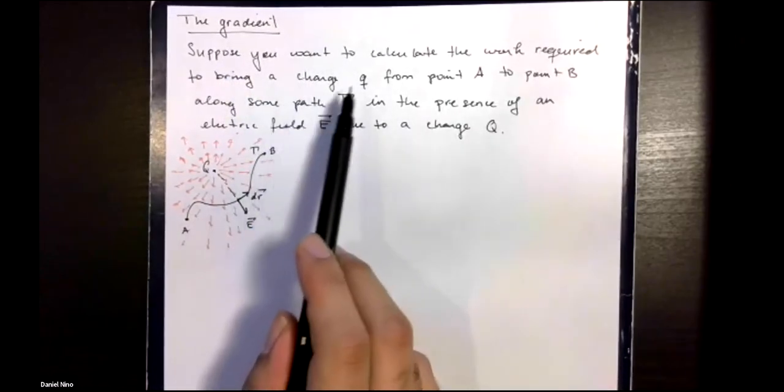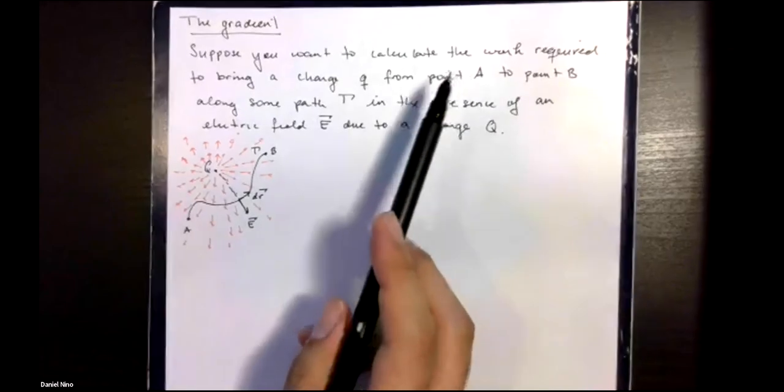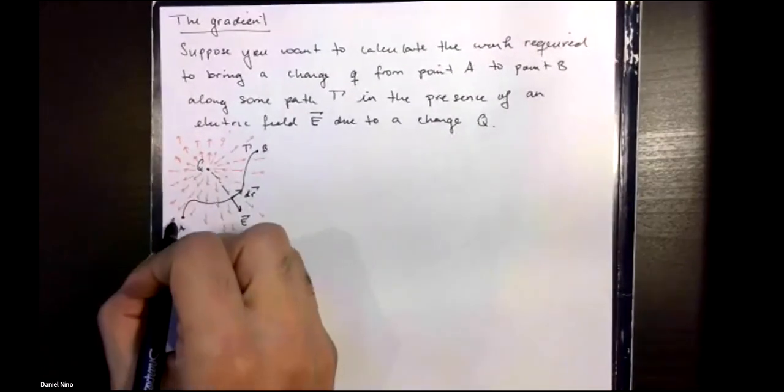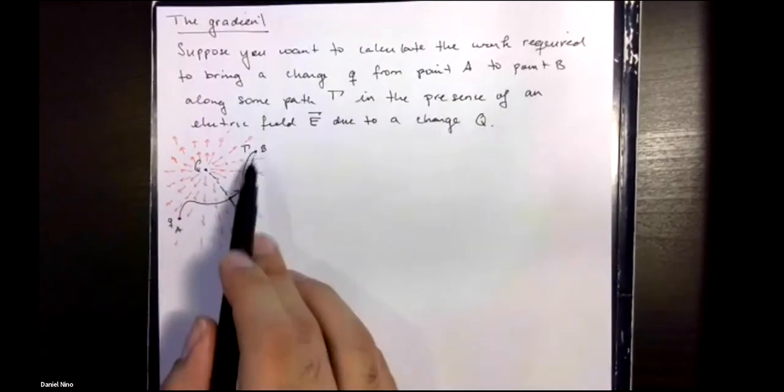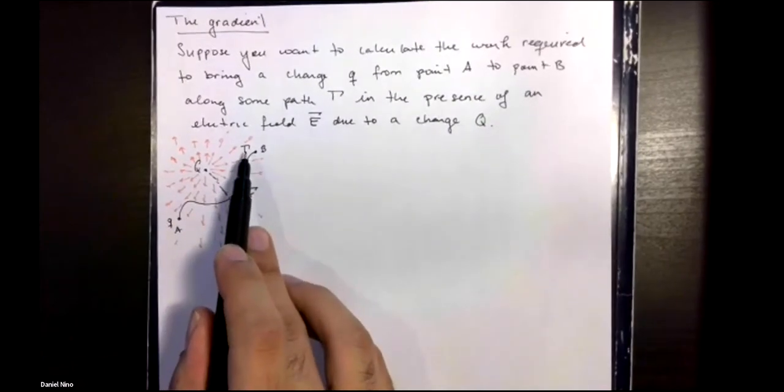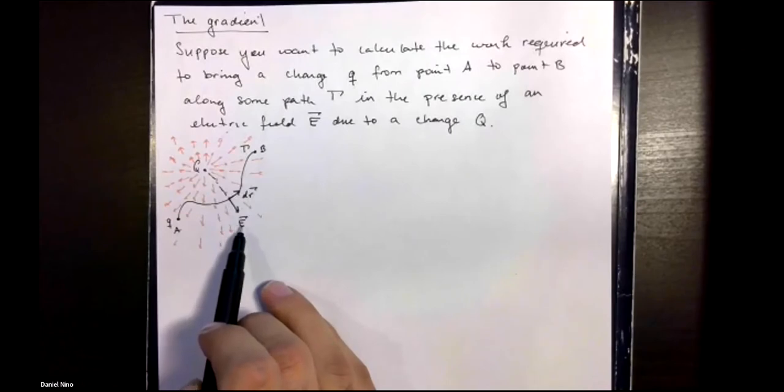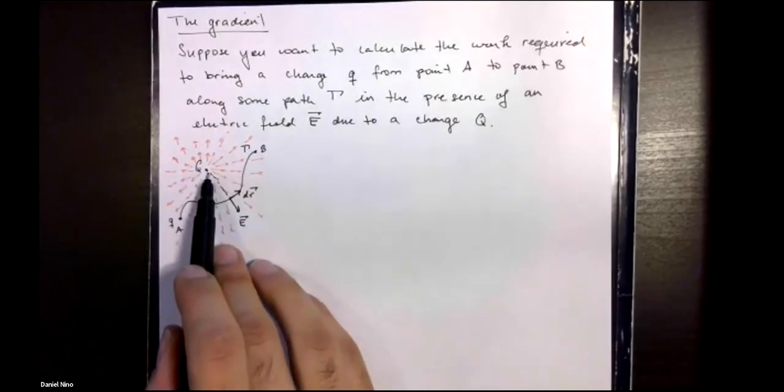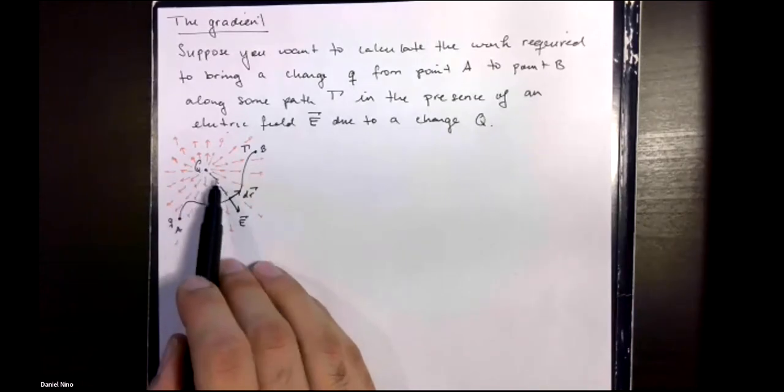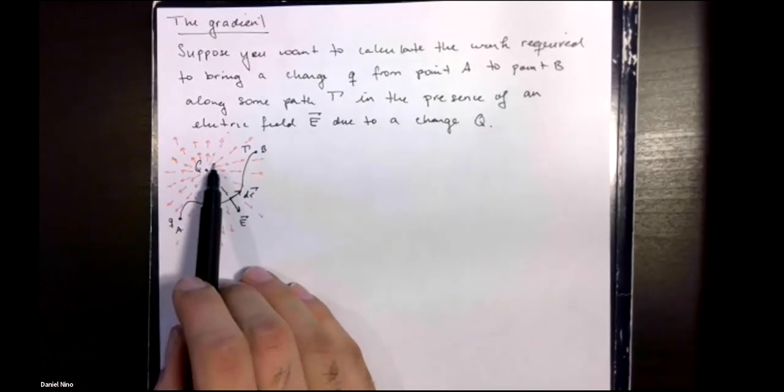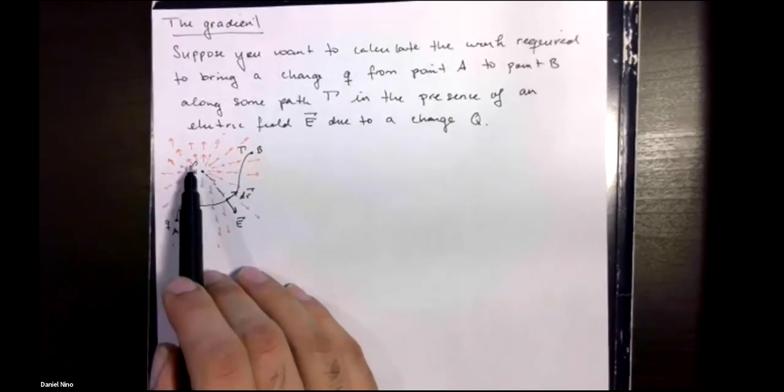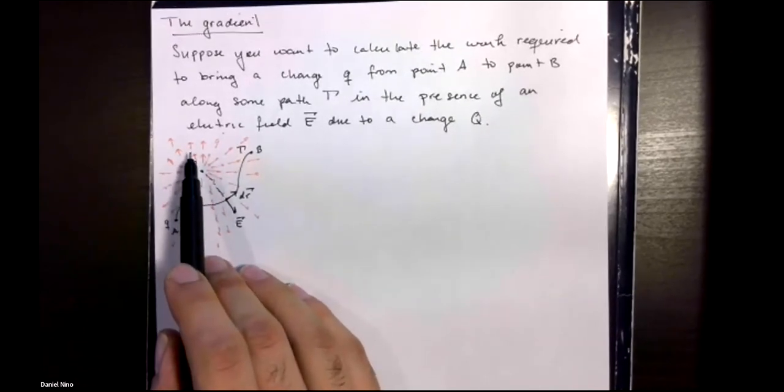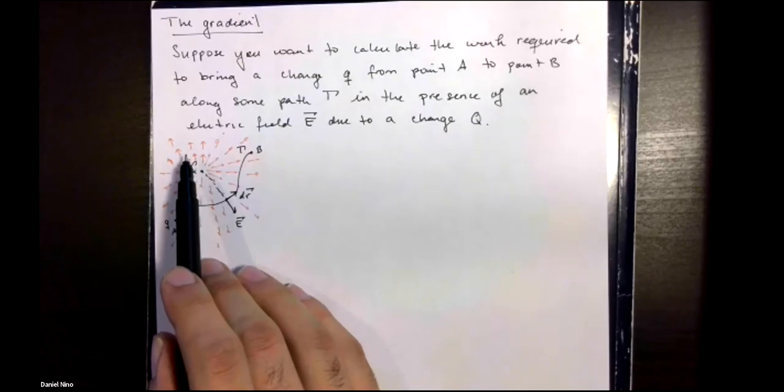So suppose that you want to calculate the amount of work that's required to bring a charge little q from point A all the way to point B by some path gamma in the presence of an electric field E that's due to another charge capital Q. Capital Q gives off an electric field which is a vector field, which means that every point is associated with a vector, so a magnitude and a direction.